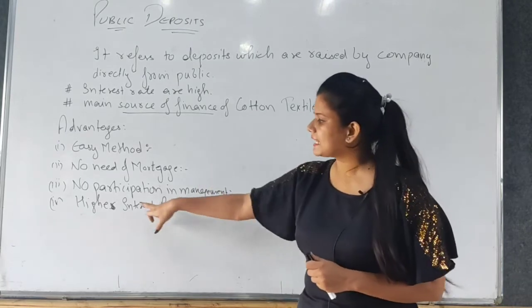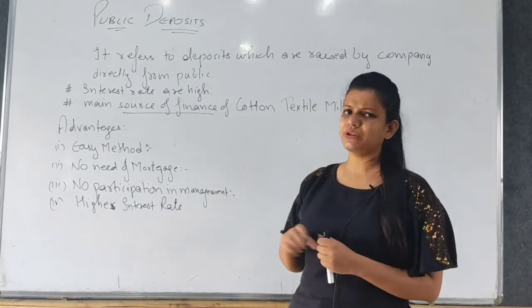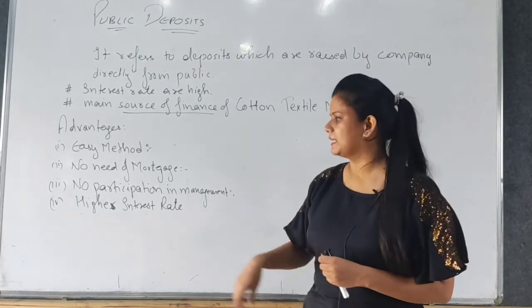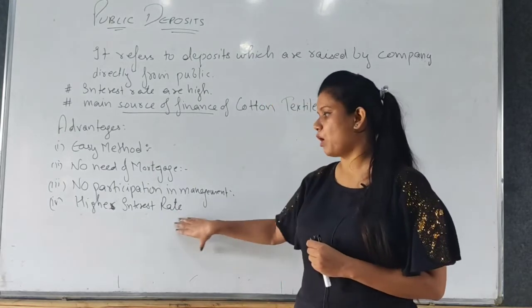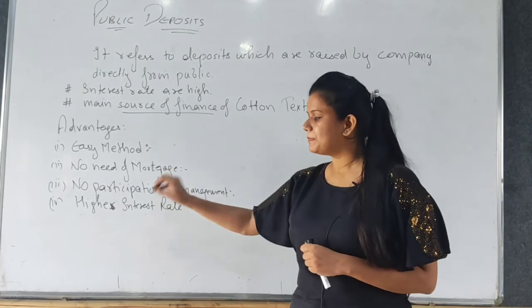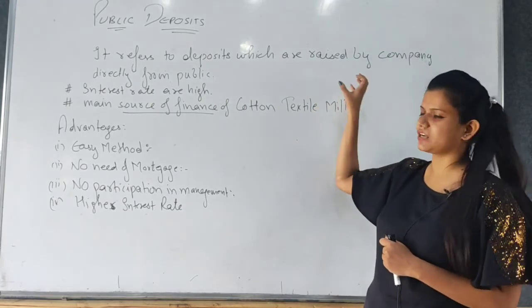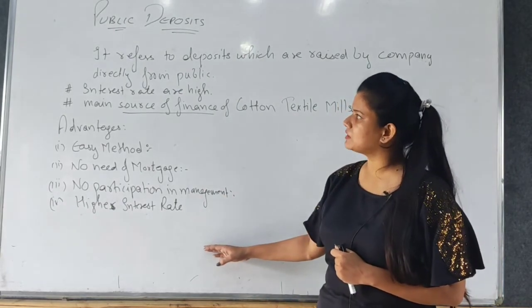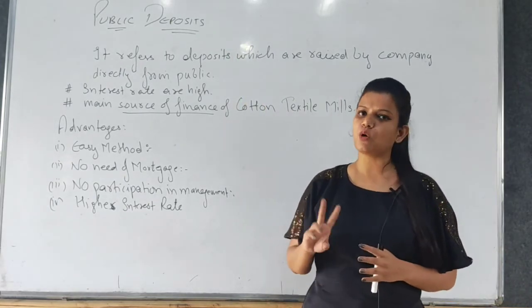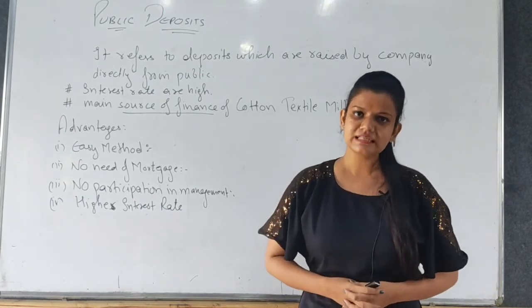The third advantage is no participation in management. The public who deposit money in the company have no right to participate in management because they are generally creditors of the company, just like debenture holders. The fourth advantage is a higher interest rate for investors — they receive a higher rate from the company than from banks. So these are the advantages of public deposits. Both ploughing back of profits and public deposits are sources of finance that can be used as long-term or medium-term sources. Thank you.